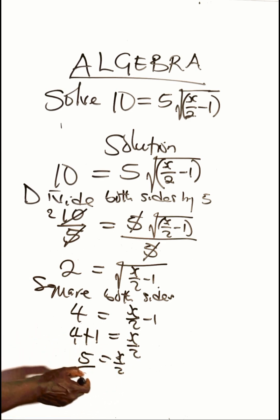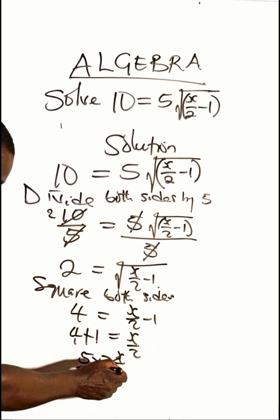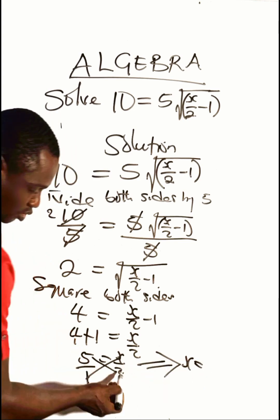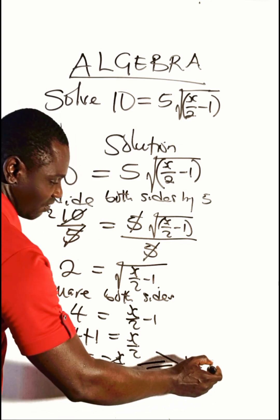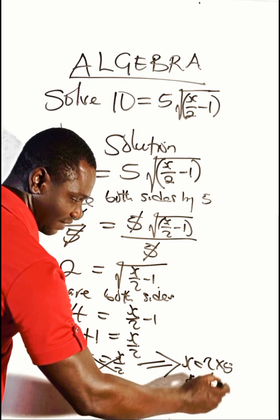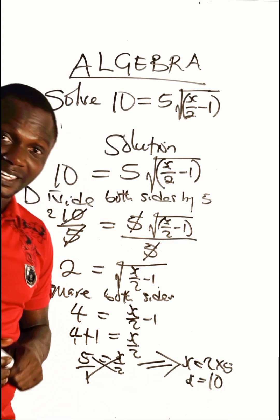So to find x, let's cross multiply. That shows that x will now be equal to 2 multiplying 5. 2 times 5, which is equal to 10. So the value of x is 10.